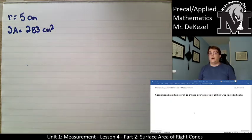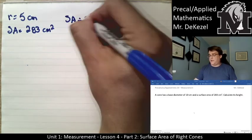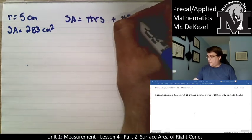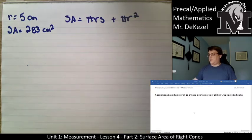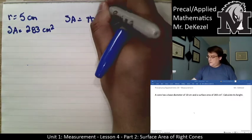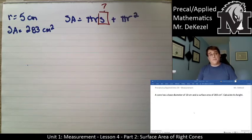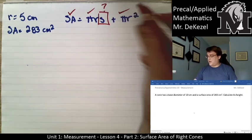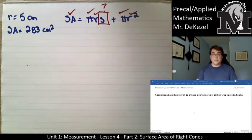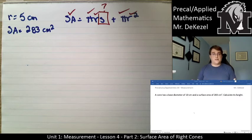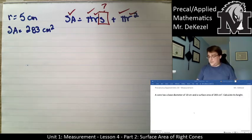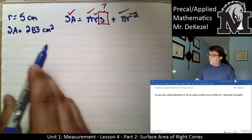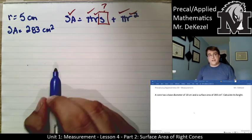The diameter is 10, so the radius is 5 centimeters, and the surface area is 283 centimeters squared. When I don't immediately know what to do, I write down what I know and compare it to the formula. The surface area of a cone is πrs plus πr². The only unknown is the slant height s — I know the surface area, π is a constant, and r comes from the diameter. So I'll rearrange to find s, then use the Pythagorean theorem to find the height.